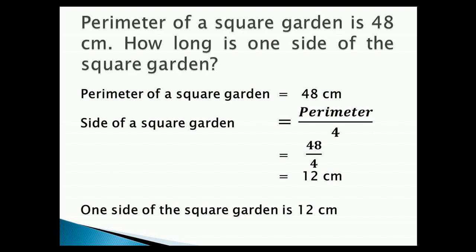The perimeter of a square garden is 48 centimeters. How long is one side of the square garden? We know that perimeter of a square equals 4 into side. So, the side of the square garden equals perimeter divided by 4, which equals 48 divided by 4, equals 12 centimeters. Therefore, one side of the square garden is 12 centimeters.